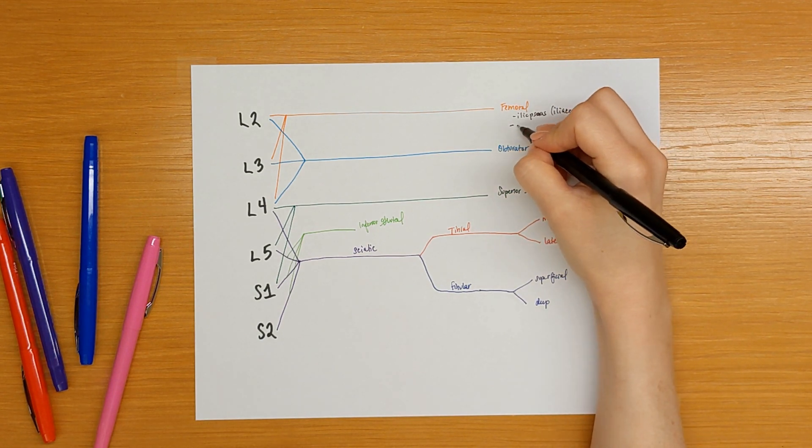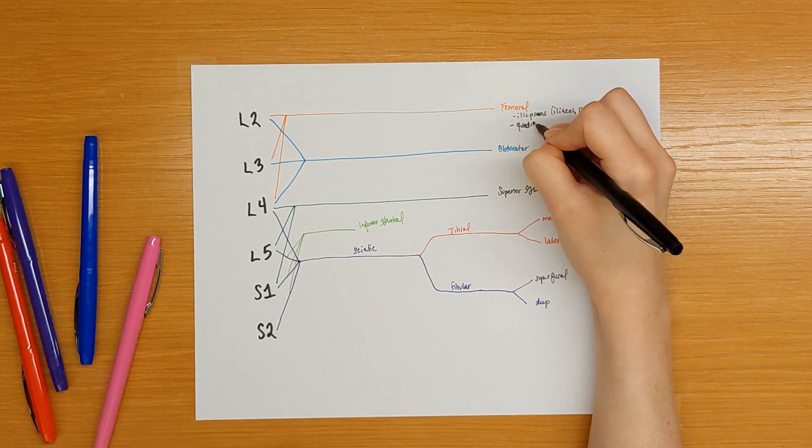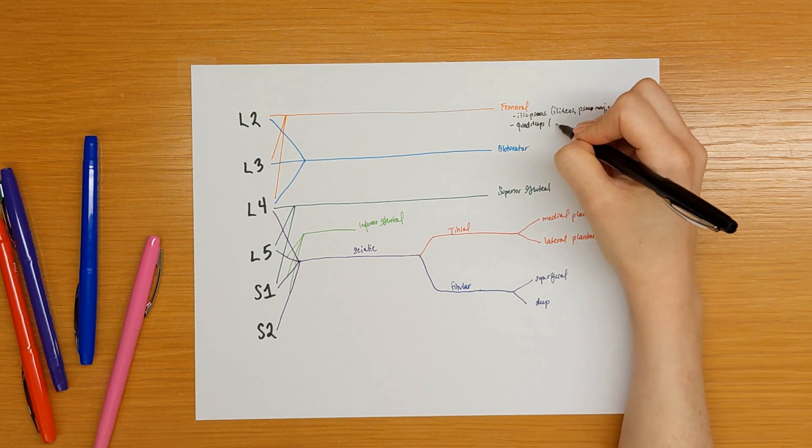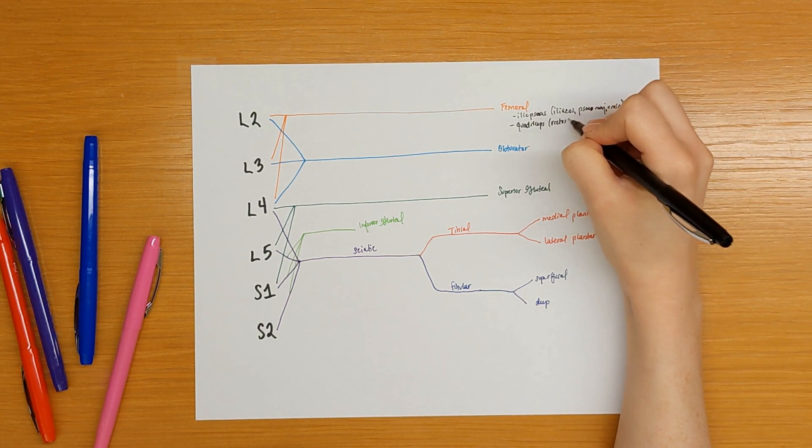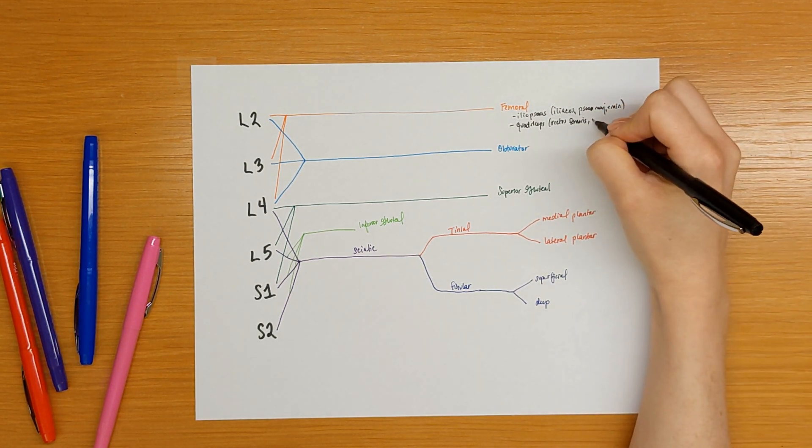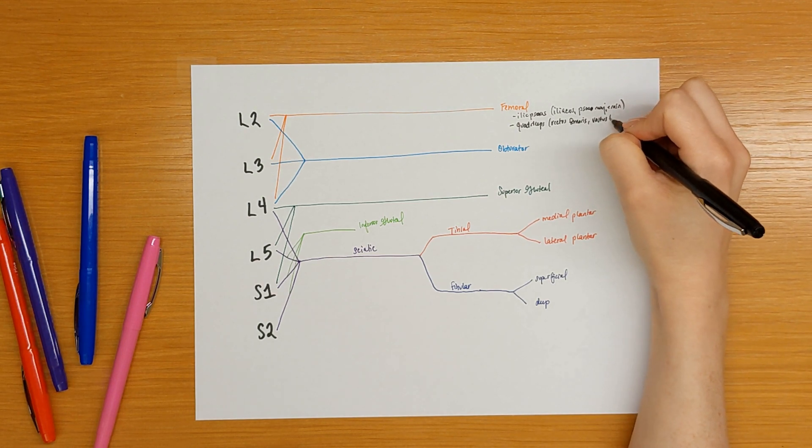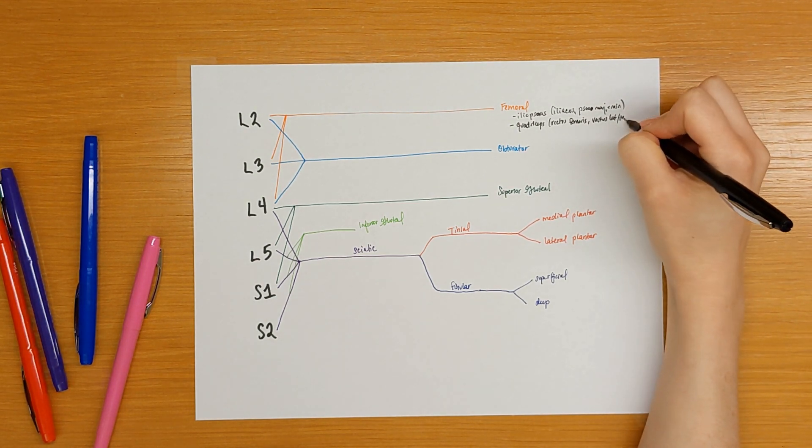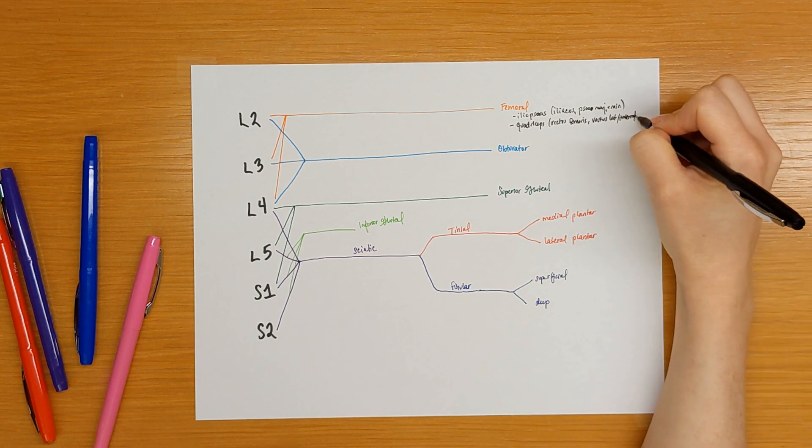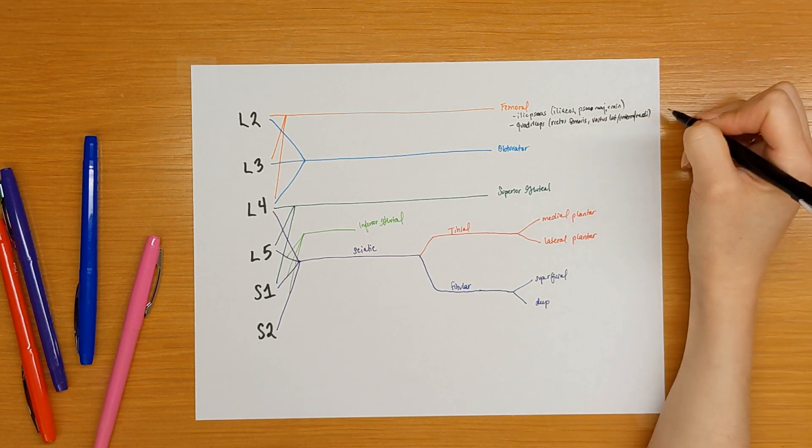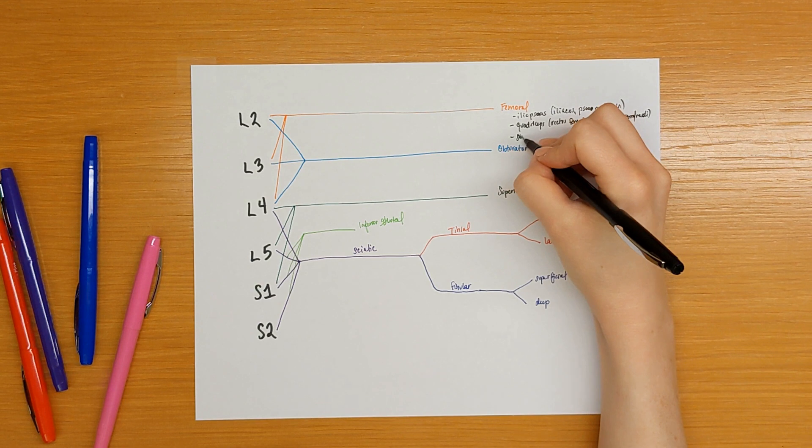The femoral nerve innervates the quadriceps which is our rectus femoris, vastus lateralis, intermedius, and medialis, and then our sartorius muscle.